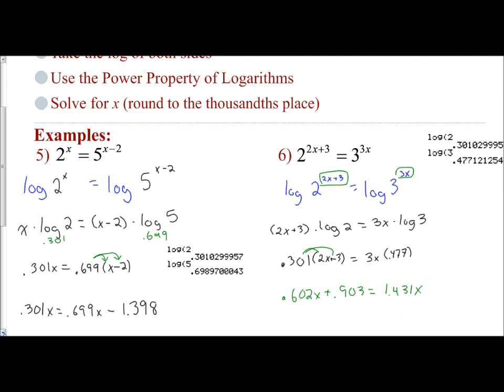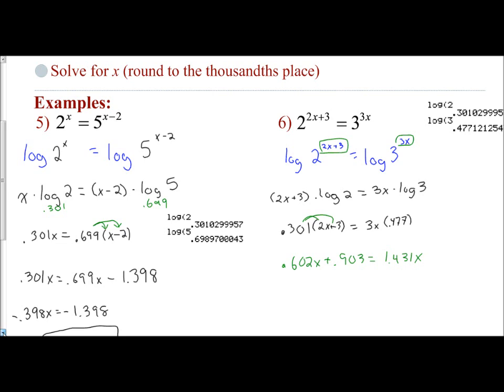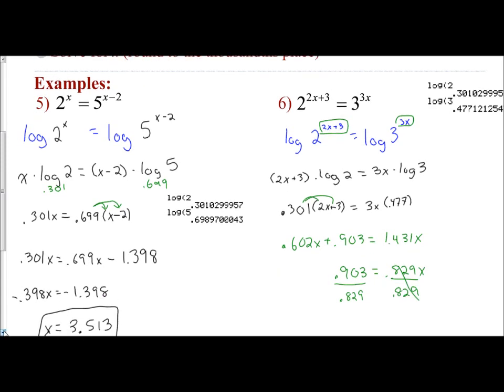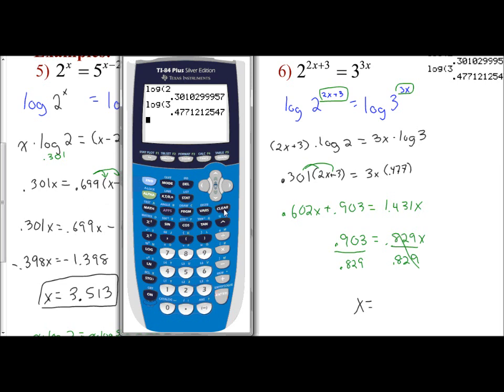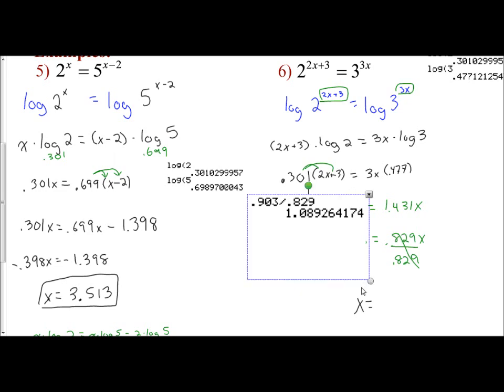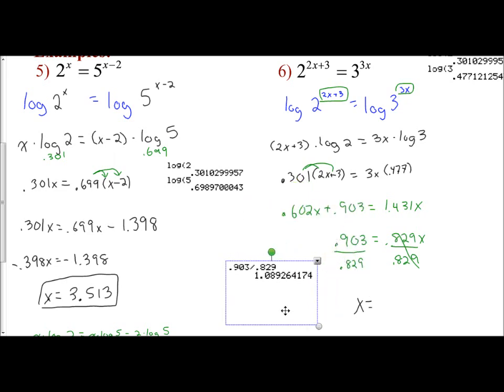So to solve this, I'm going to subtract the 0.602. So 1.431 minus 0.602 is 0.829. So I have 0.903 equals 0.829x. And so now I would divide both sides by 0.829, and that's going to give me my value for x. And so x equals, I'll just go to my calculator, clear out what I have. I have 0.903 divided by 0.829, and I get 1.0892, which does not round it up. And so my answer is 1.089.